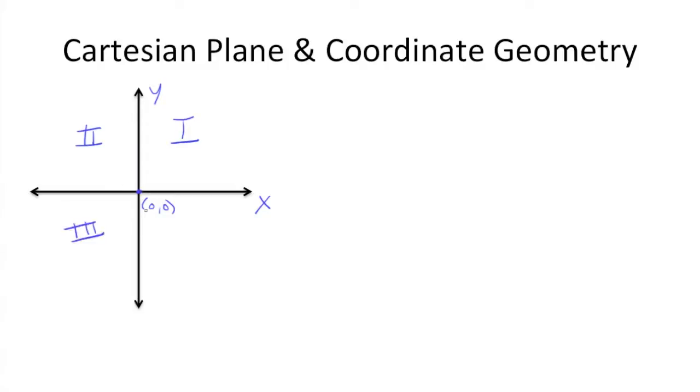In quadrant 3, you'll have negative y's and negative x's. And in quadrant 4, you'll have positive x's and negative y's. Just remember the format is always x, y when you're referring to points on a Cartesian plane.